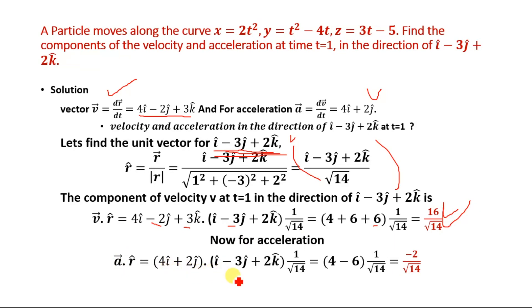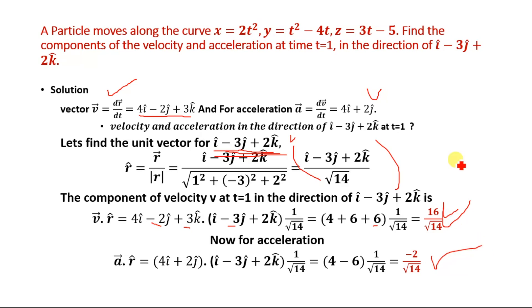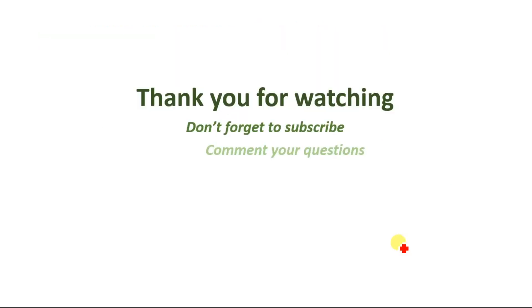For the acceleration component, a · unit vector = (4i + 2j) · (i - 3j + 2k) / √14. Computing: 4(1) + 2(-3) + 0(2) = 4 - 6 + 0 = -2. So the acceleration component in the direction of i - 3j + 2k is -2/√14. That's it — thank you for watching, don't forget to subscribe and comment your questions.